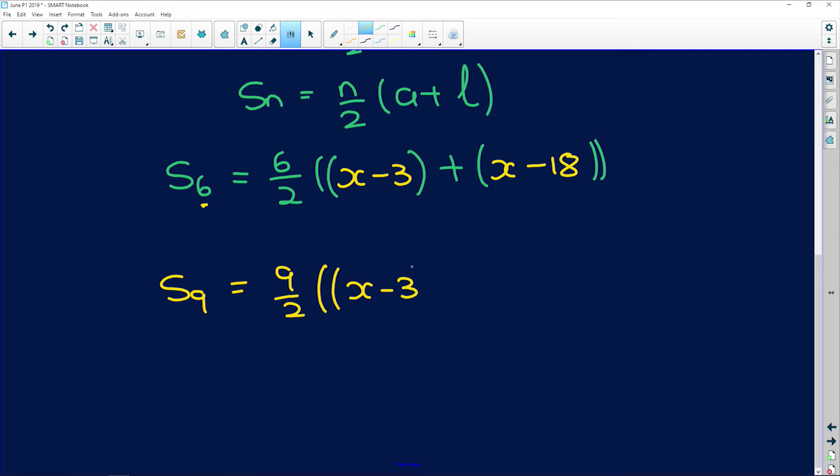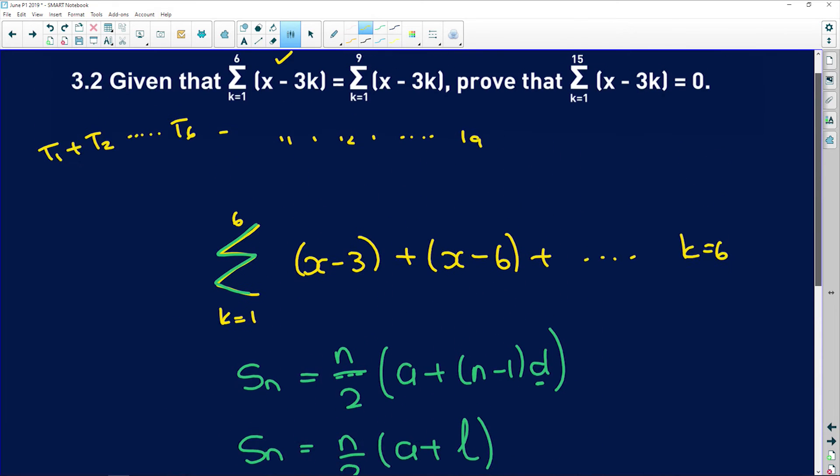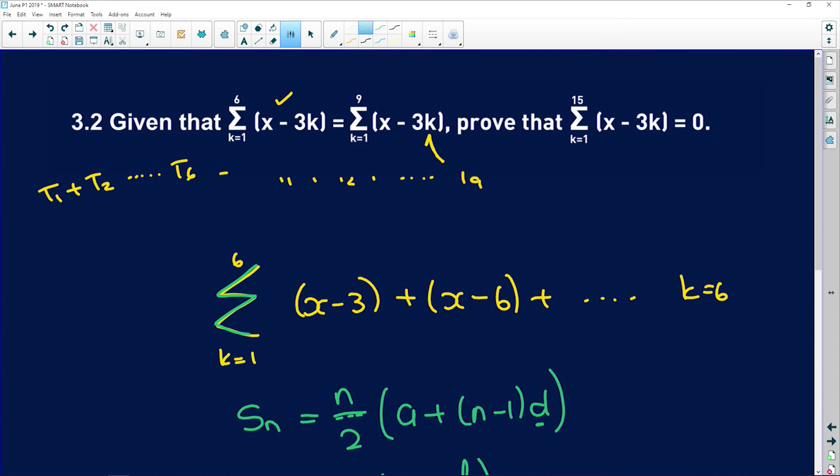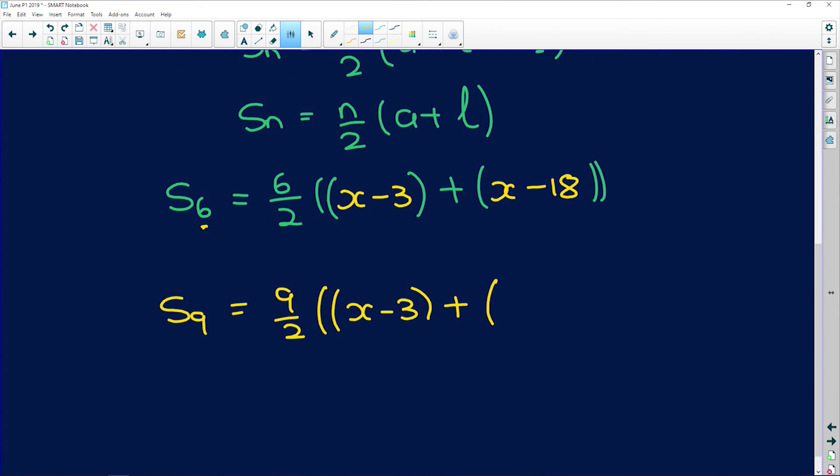S9 is equal to 9 over 2 into the first term, which is going to be the same, but the last term we're going to have to substitute 9 into here, so we're going to get x minus 3 times 9, which is 27, so x minus 27.